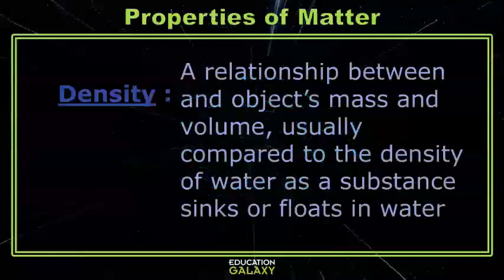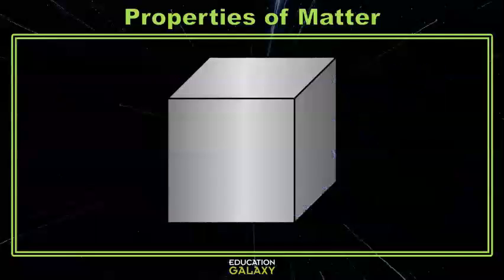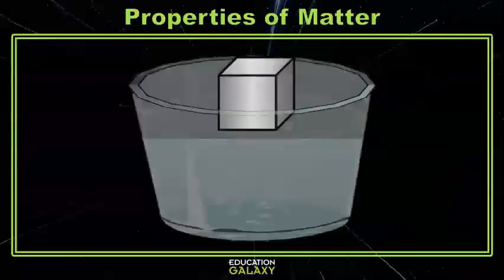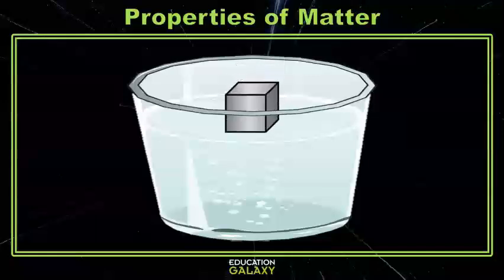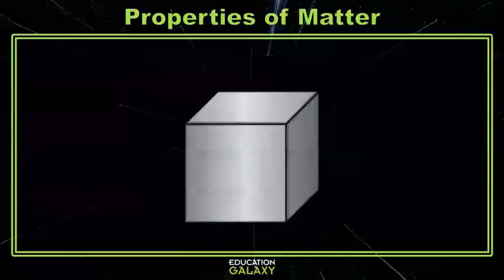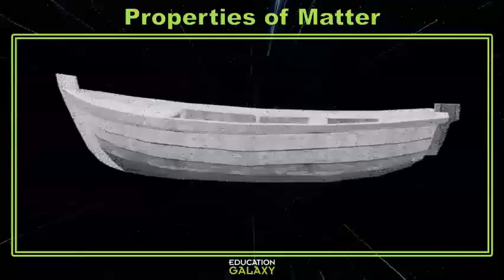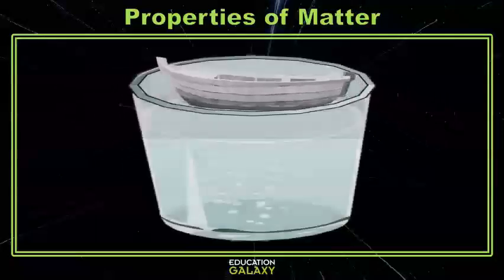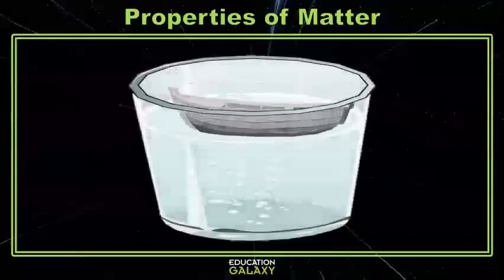All matter also has the ability to sink or float based on density. Usually we compare density to that of water. Density is just a comparison between mass and volume. Let's take an iron cube — if I put it in water, it's more dense than the water, so it's going to sink to the bottom. But if I take that same cube and melt it down into a very thin and wide ship, I've changed the density by altering the relationship between mass and volume. And now if I take that same amount of metal and put it on top of the water, it can float.